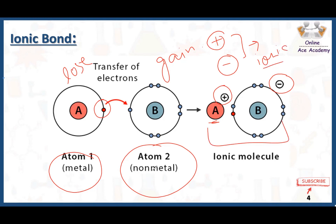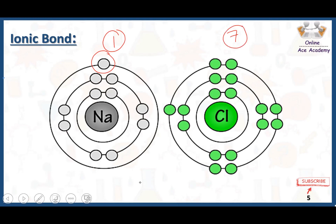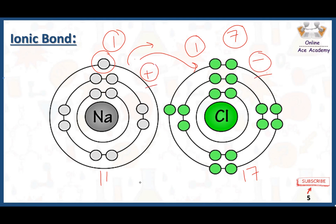The most popular example of ionic bond is NaCl — sodium chloride — which is the table salt we use at home. In the outermost shell of sodium there is only one electron, and in the outermost shell of chlorine there are seven electrons. The atomic number of sodium is 11 and of chlorine is 17. Sodium gains stability after losing one electron and chlorine gains stability after gaining one electron.